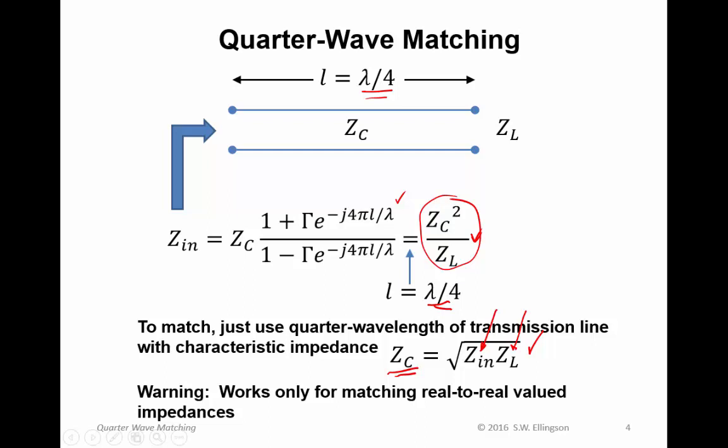So don't forget, this technique only works, as I've shown here anyway, only works when converting real impedances to other real impedances. And if one of those impedances is complex valued, then you have to add something to this to deal with that imaginary component.